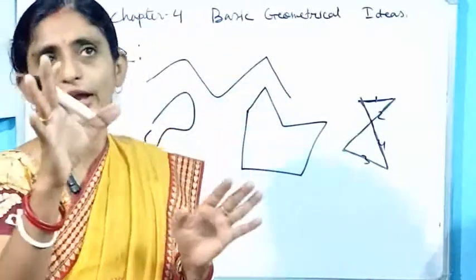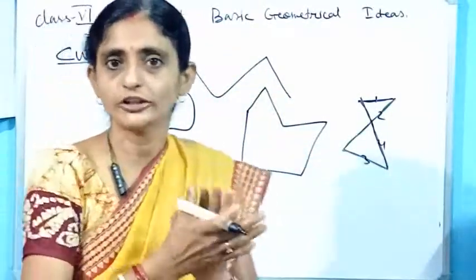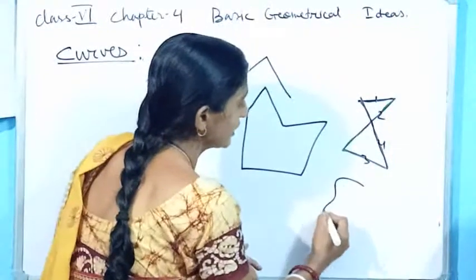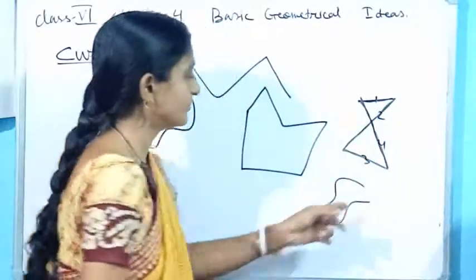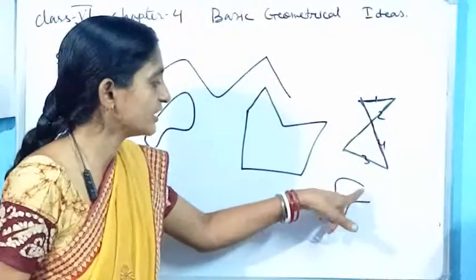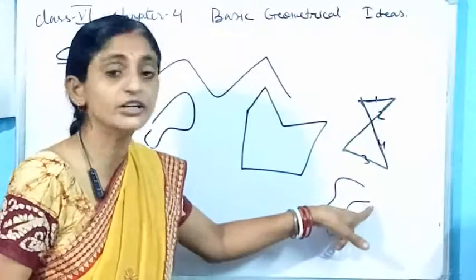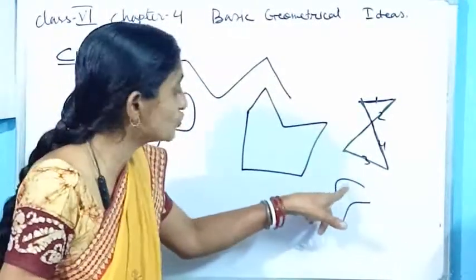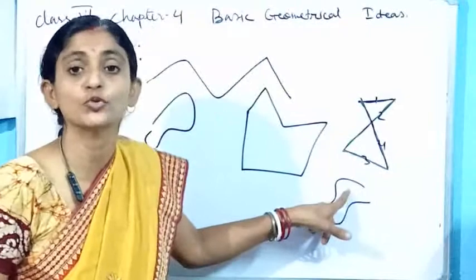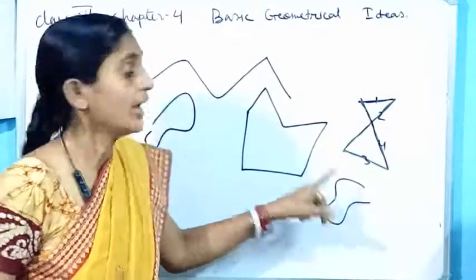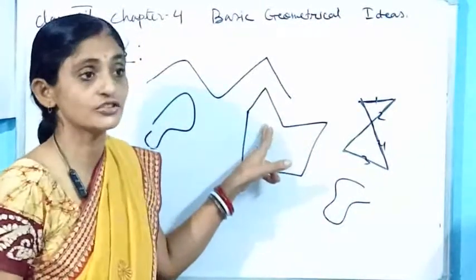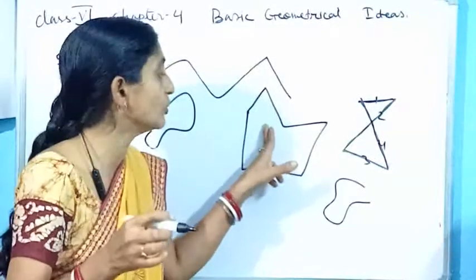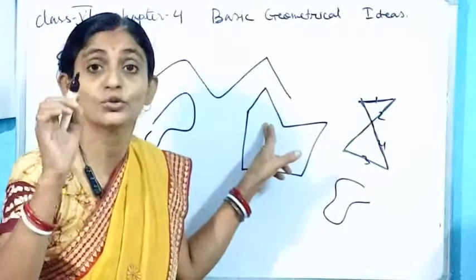Now I think everyone has got the idea of curves. If I have drawn it like that and kept it open — that is, the starting point and ending point had not touched each other — so this will be called an open curve. And when the starting point and the ending point have touched, it will be called a closed curve.